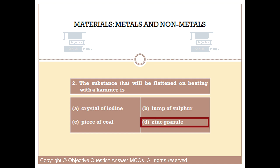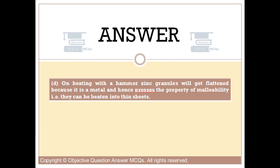The right answer is option D. On beating with a hammer, zinc granules will get flattened because it is a metal and hence possesses the property of malleability, i.e., they can be beaten into thin sheets.